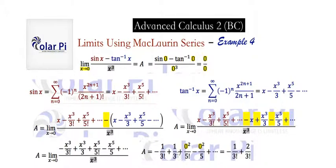Now the next guy x to the fifth over five factorial divided by x cubed is going to be x squared over five factorial. But remember, we're doing limit as x goes to zero. So x squared over five factorial, we plug in zero, and so we know that it's going to be zero.